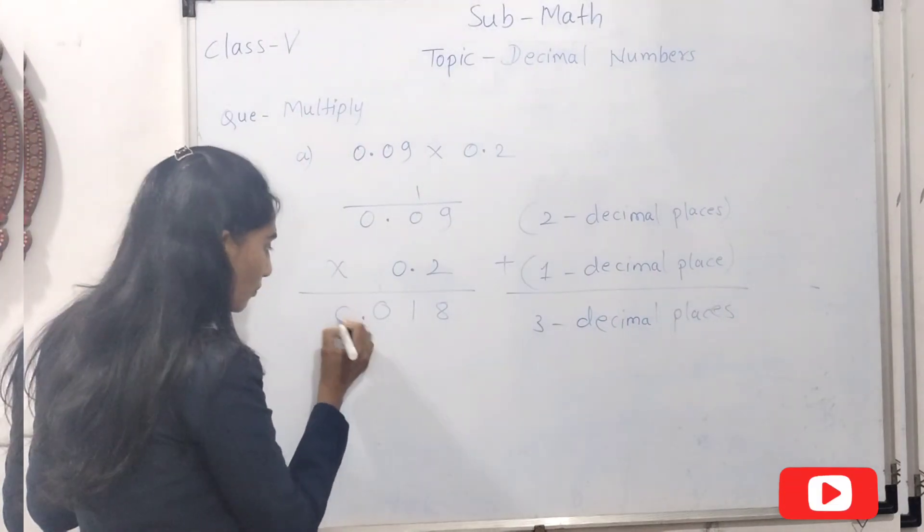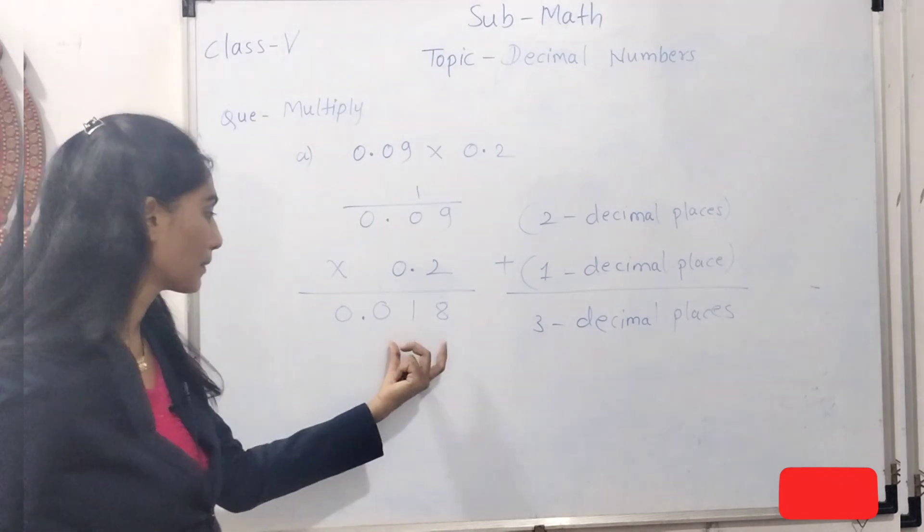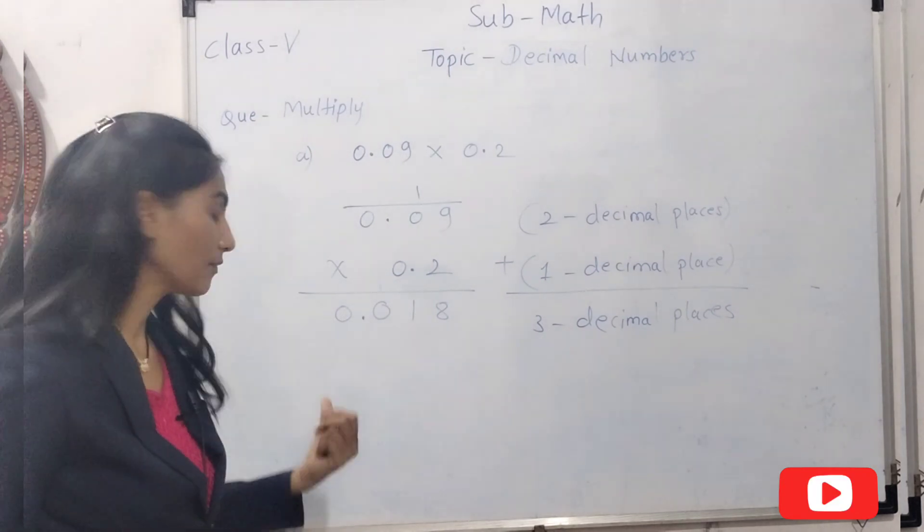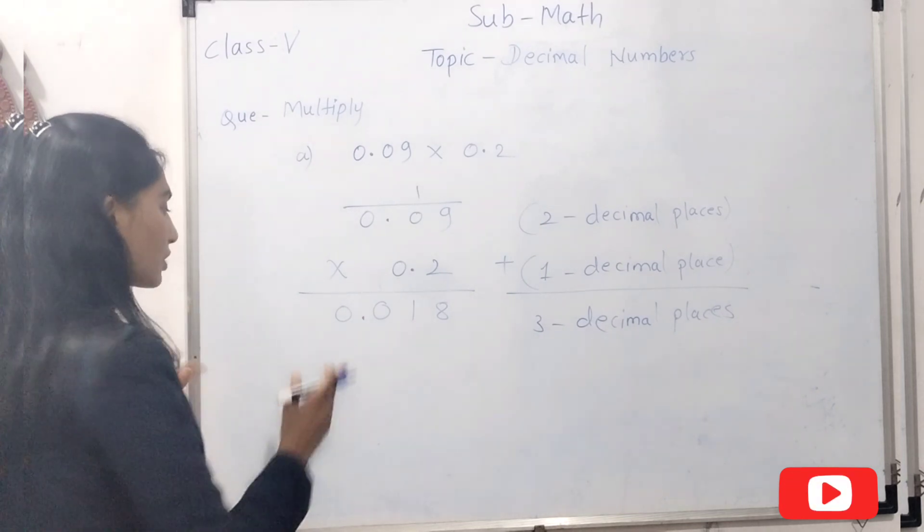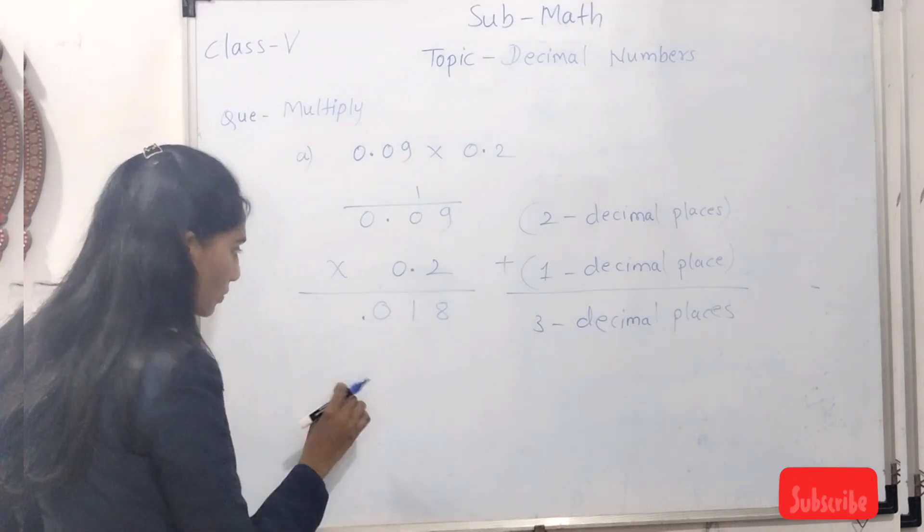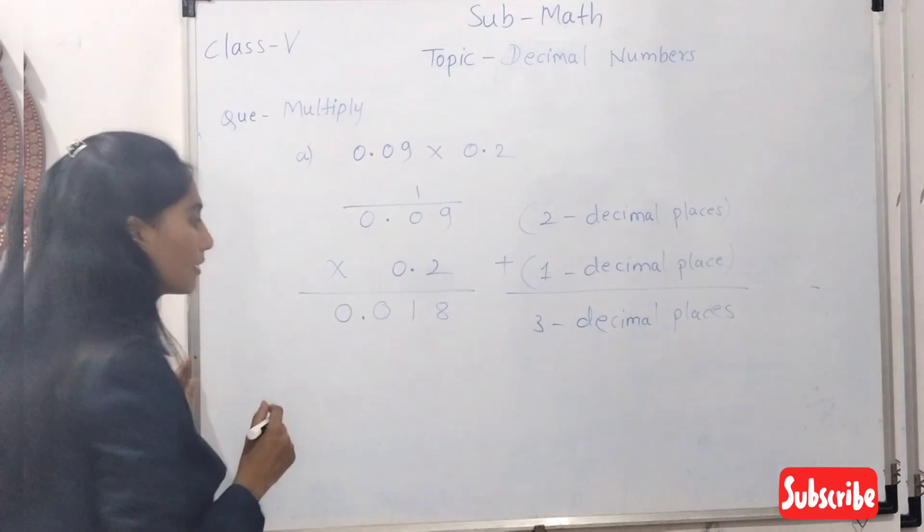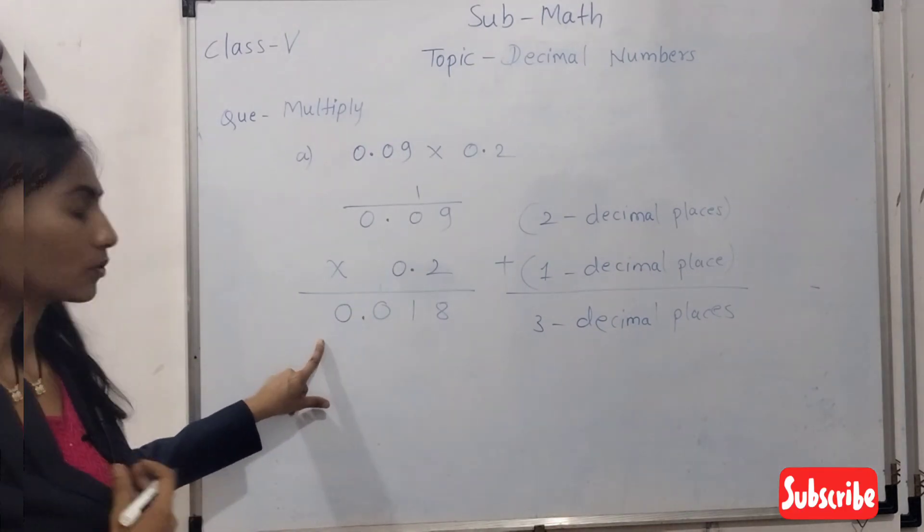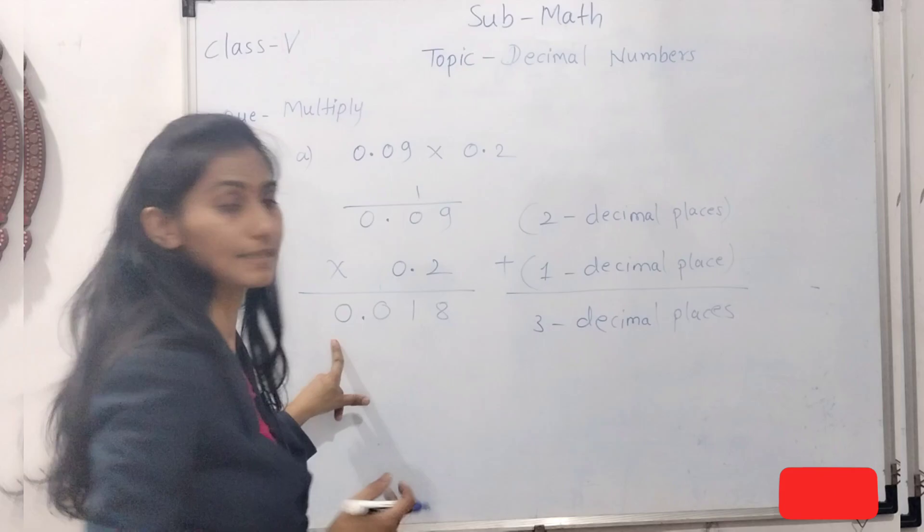That's why we will put 0 here. 0 tells us about the value of this number is less than 1. Now see this example.